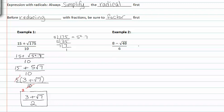Moving on to example two, we need to figure out and simplify the square root of forty-eight before we can do any reducing of the fraction as a whole.